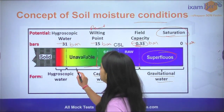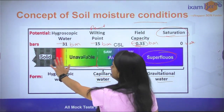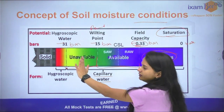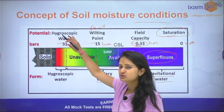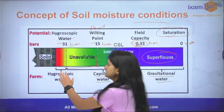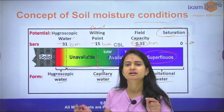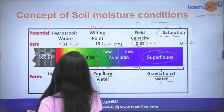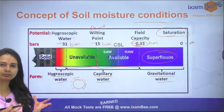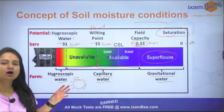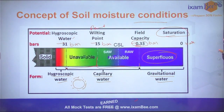After the permanent wilting point, the water is unavailable to plants — that's why it is called unavailable water. The hygroscopic water, which is constant, is called hygroscopic water. It is attached and present in the form of water vapour and is not available to any plant. These are the different concepts of soil moisture.